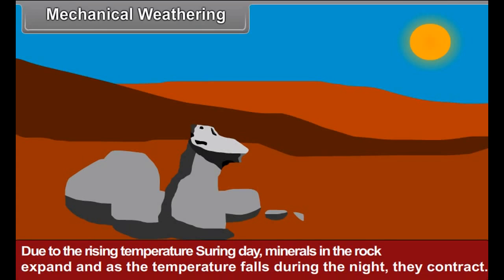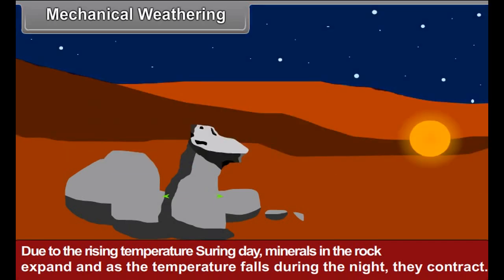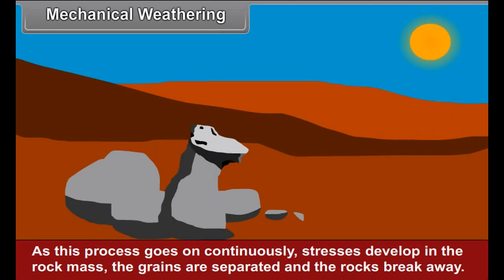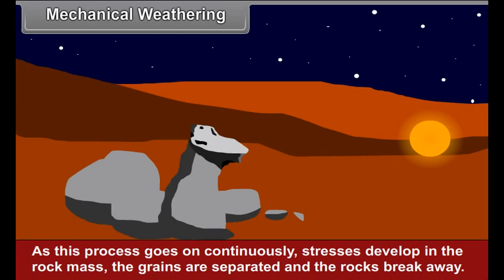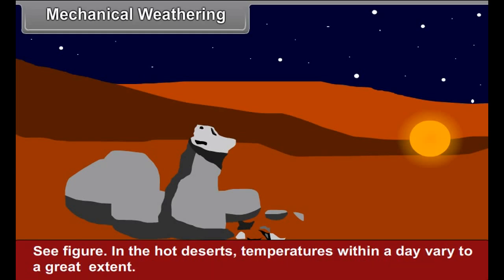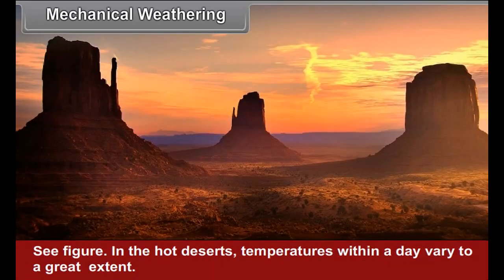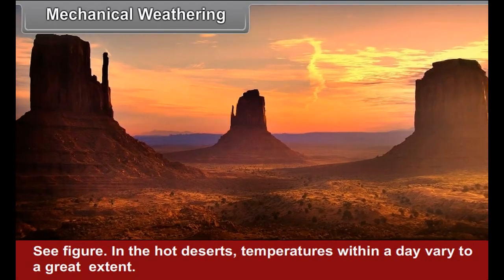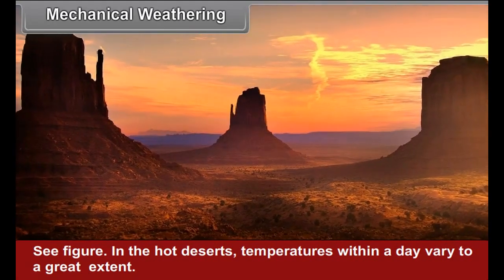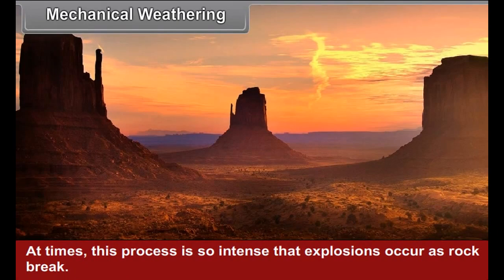In mechanical weathering, due to the rising temperature during the day, minerals in the rock expand and, as the temperature falls during the night, they contract. As this process goes on continuously, stresses develop in the rock mass. The grains are separated and the rocks break away. In the hot deserts, temperatures within a day vary to a great extent. At times, this process is so intense that explosions occur as rocks break.